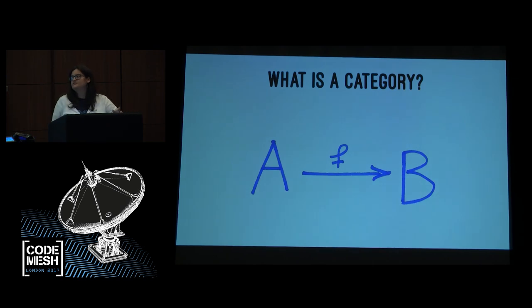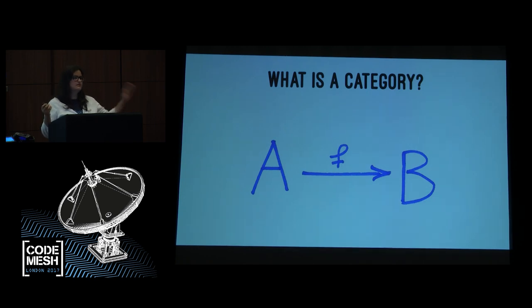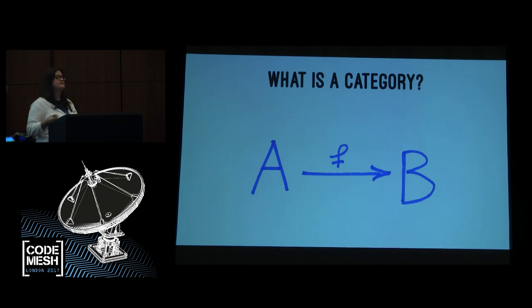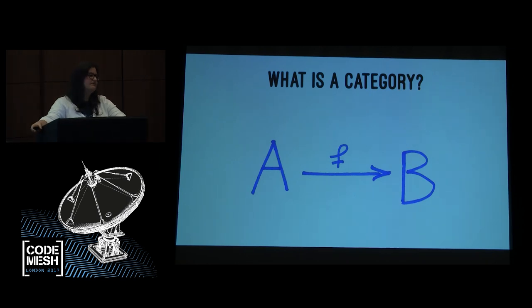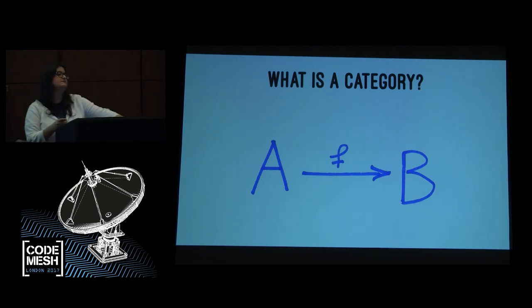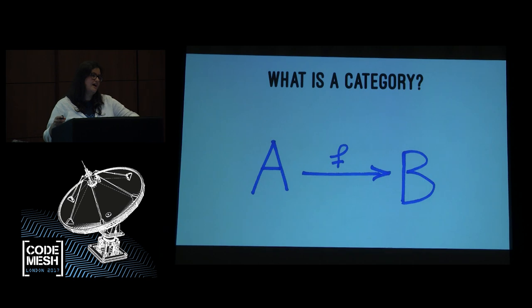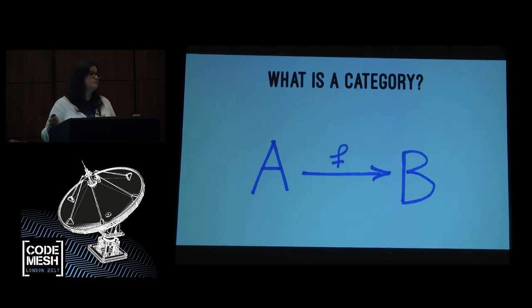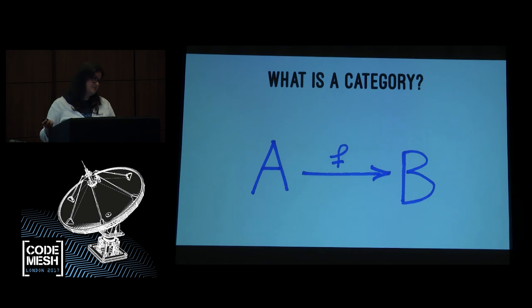So what's a category? A category is two objects — and I'll comment on what objects are in a second — and something, let's call it an arrow, that connects two objects. We have a clear definition of an arrow, but what is an object? I don't know. It could be anything: a chair, a type, a person, a flower. Mathematicians are really vague on what an object is, because they have to do a way tougher job than we do as programmers. But we know that most of the time when we programmers use category theory, the objects are types and the arrows are functions.